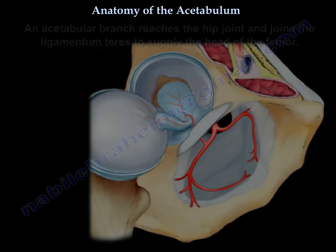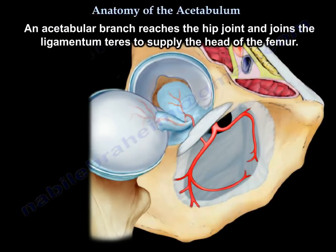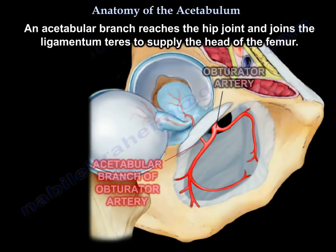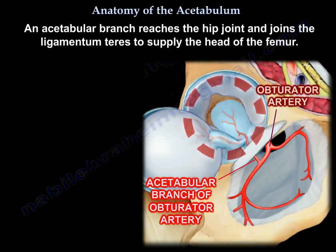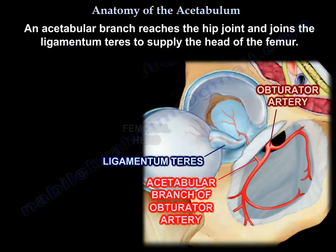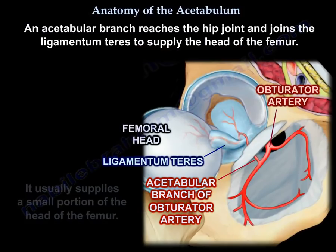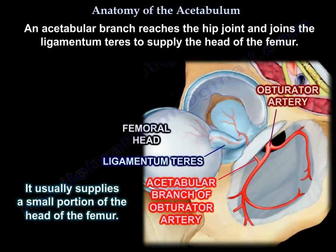An acetabular branch reaches the hip joint and joins the ligamentum teres to supply the head of the femur, usually supplying only a small portion of the femoral head.